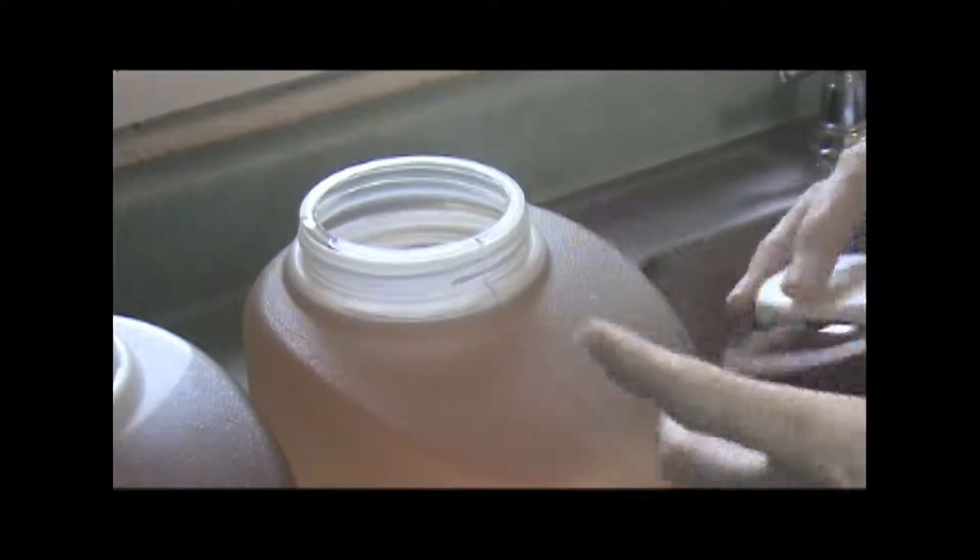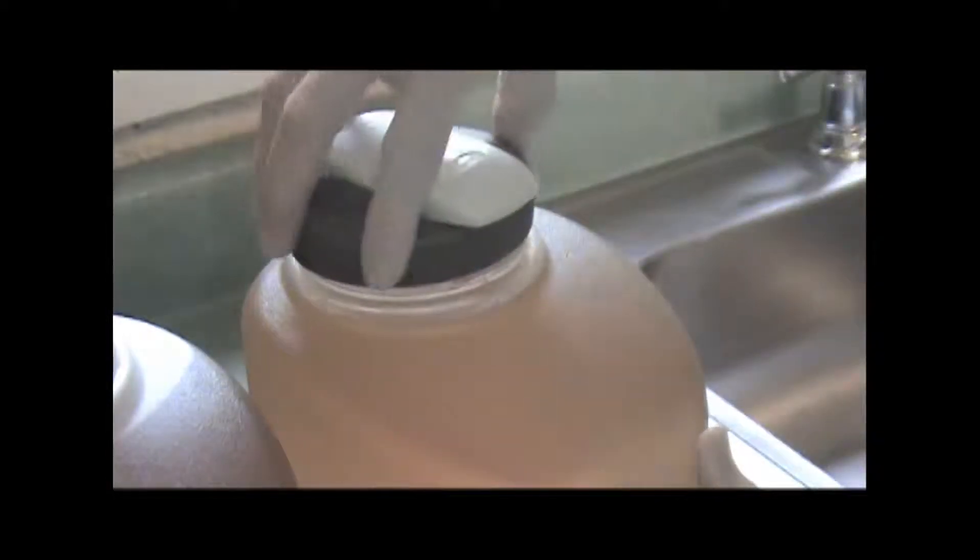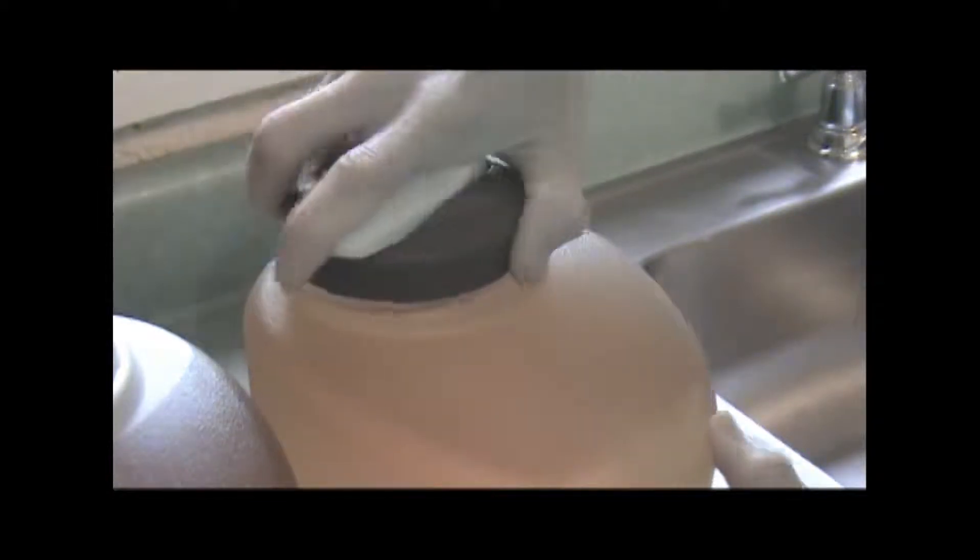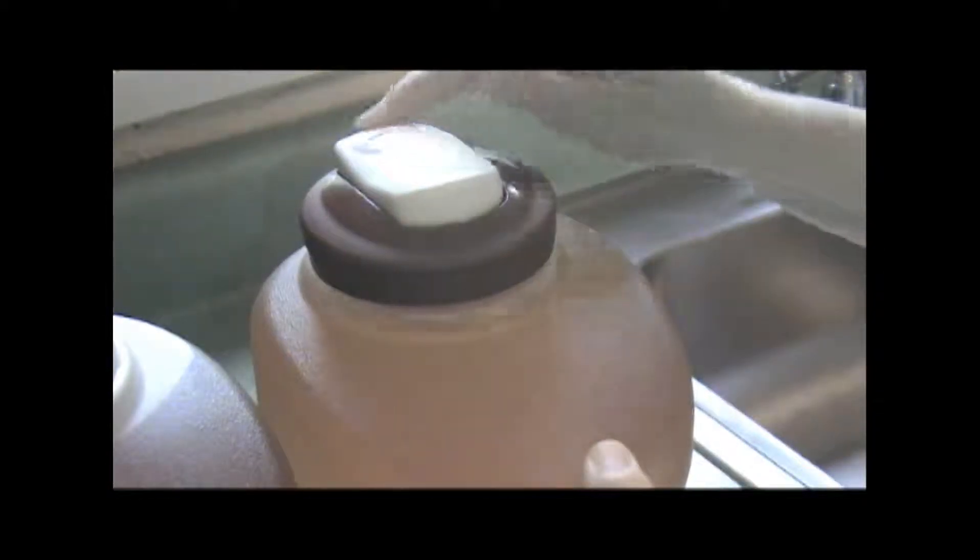Basically what you want to do is take the lid and just sit it around on there. You'll hear it. It'll click down. You hear that? And then turn it and tighten. You'll be able to tell that it's the right way because everything will line up.